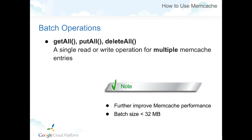Another feature provided specifically by Memcache is a batch operation to further improve performance. Memcache is a shared service running on a server, and every API call is a network call. If you read 100 objects, that's 100 network calls, and the accumulated network overhead could be significant. Memcache provides a mechanism to batch those 100 network calls into a single network call, further improving performance. The only limitation is that the batch size must be less than 32 megabytes.